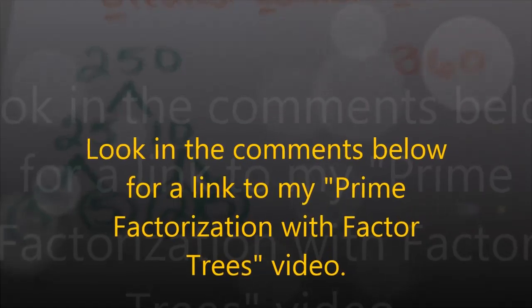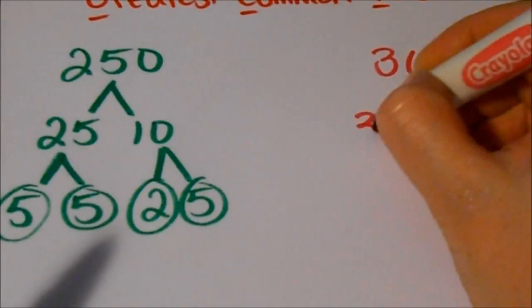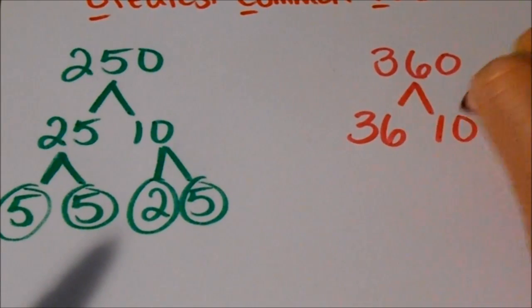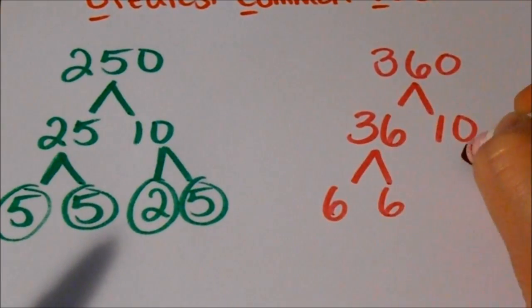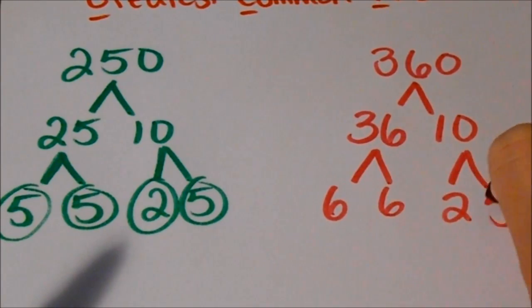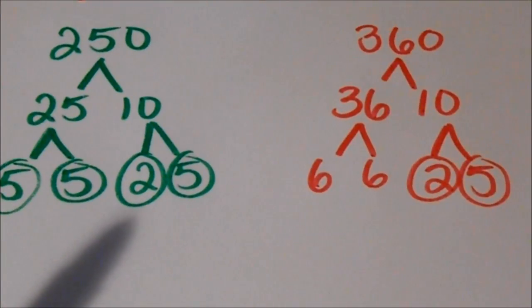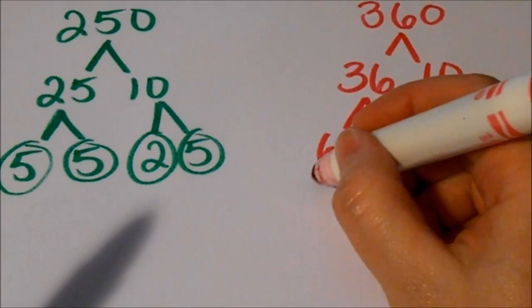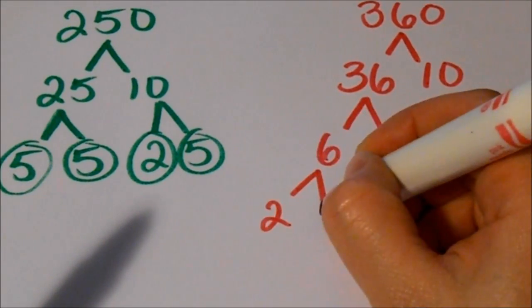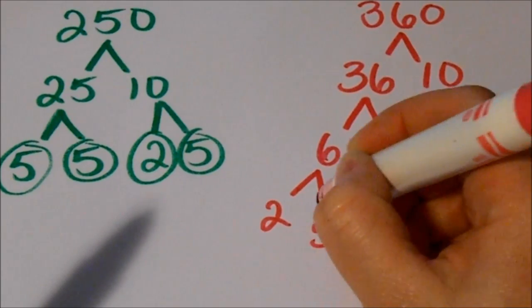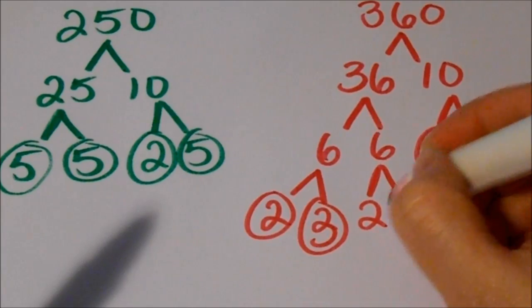For 360, I'm going to do the same thing. 360 is 36 times 10. The 10 factors into 2 times 5, which are both prime. But the 6s from 36 can each be factored into 2 times 3, and 2 times 3.